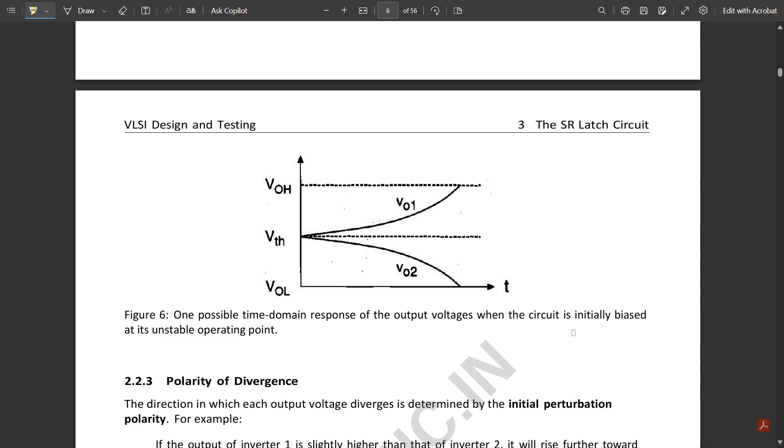This shows the inverse characteristics of each inverter, the VOH and VOL points. This is one possible time domain response of the output voltages when the circuit is initially biased at its unstable operating point.